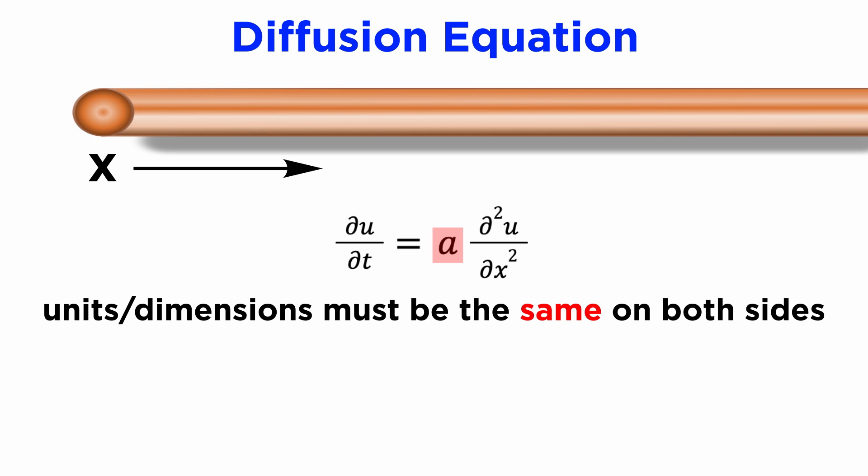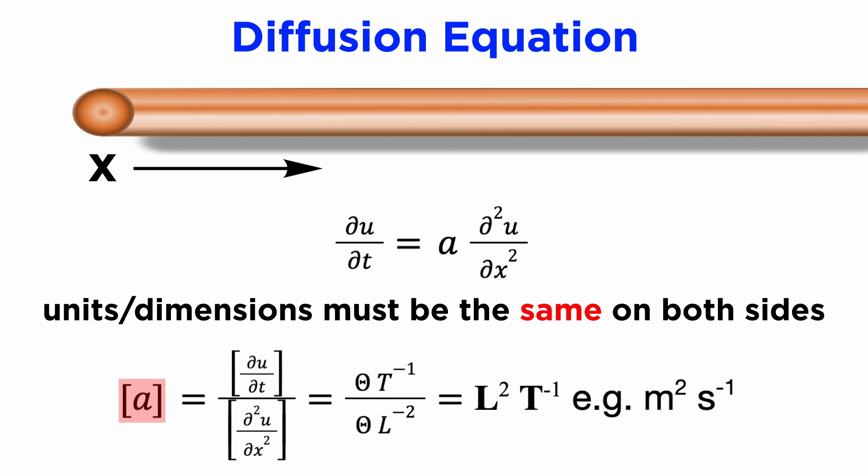We can therefore find the dimensions of our constant A using simple algebra. We get that the dimensions of A, which we write using the notation squared brackets of A, equals length squared divided by time.